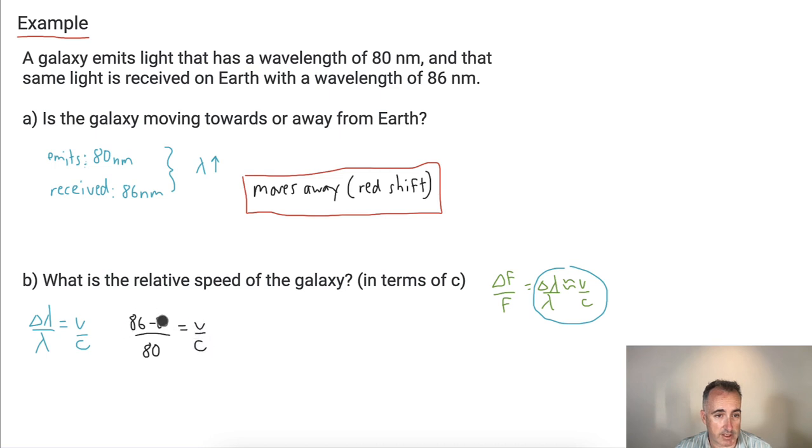Well, 86 minus 80 is just 6, so I can say V equals 6 over 80 times C. So I'm just moving my C over. So I'm getting this equation here, 6 over 80.